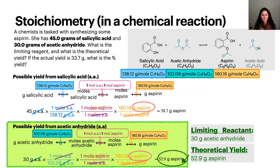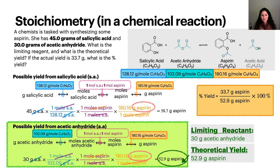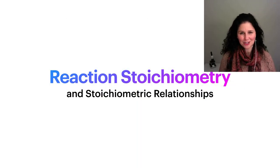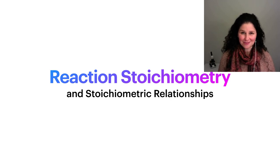Now we can calculate the percent yield using the theoretical yield and the actual yield given in the problem. Percent yield equals the actual yield — 33.7 grams of aspirin — divided by the theoretical yield — 52.9 grams of aspirin — times 100%. This gives us a value of 63.7% yield. This is the end of the lesson on stoichiometry and stoichiometric relationships. Thanks for watching this video. Now it's up to you to practice what you've just learned.